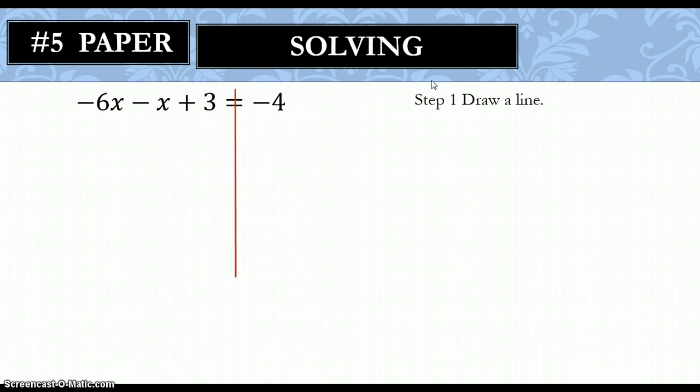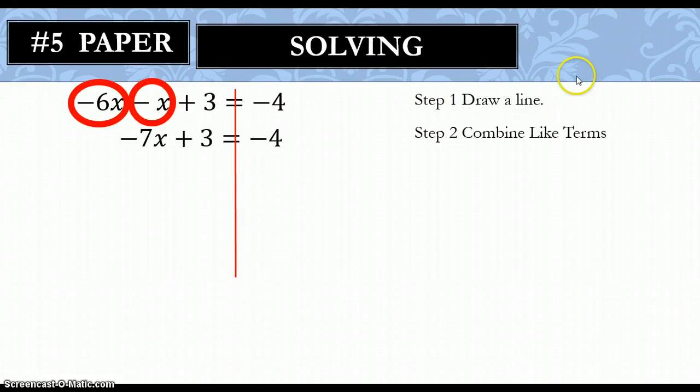Step number 1. Still the same. We draw a line. Now, step number 2 is different. Anytime you see any problem that looks like this, step number 2 is going to be to combine your like terms before you do anything else. Our like terms in this problem are negative 6x and minus x. So, we put circles around those. And combining like terms, on our left side, we end up with negative 7x plus 3 equals negative 4.